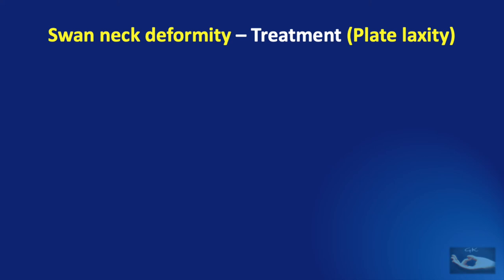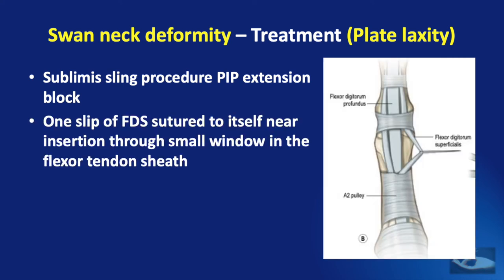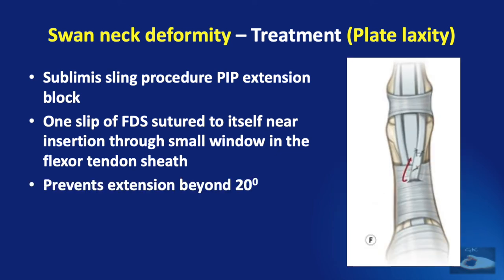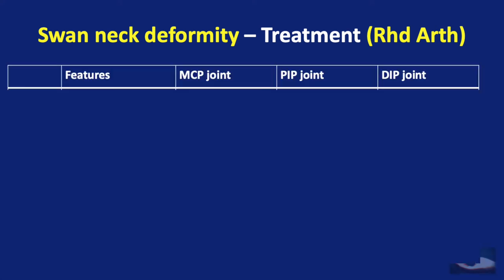When the swan neck deformity occurs due to laxity in the volar plate, the treatment consists of strengthening the flexion force at the proximal interphalangeal joint. This can be achieved by the sublimus sling procedure, which also causes a PIP extension block. One slip of the FDS is harvested, taken through a small window in the flexor tendon sheath, and sutured to itself near the insertion. This procedure prevents extension of the proximal interphalangeal joint beyond 20 degrees.